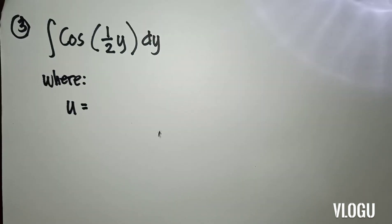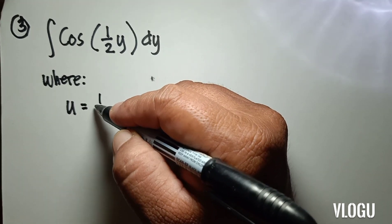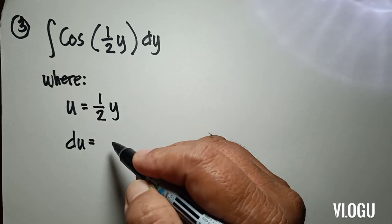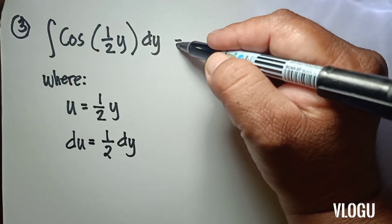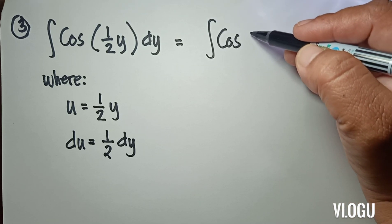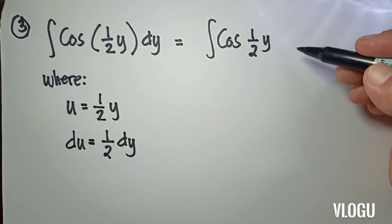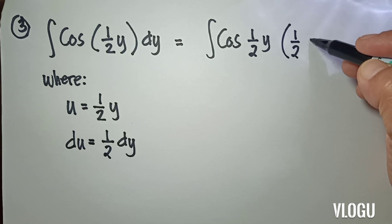Our third example is the integral of cos(½y) dy. In our given, u is equivalent to ½y. So the derivative of u, du, is equal to ½ dy. We write the given again — the integral of cos(½y) — where our du is equal to ½ dy.